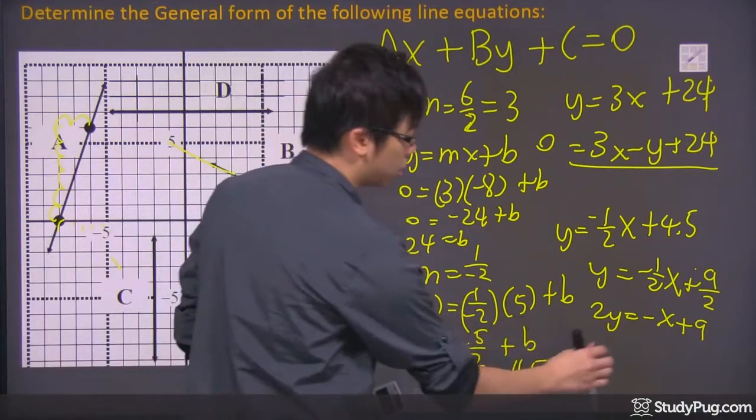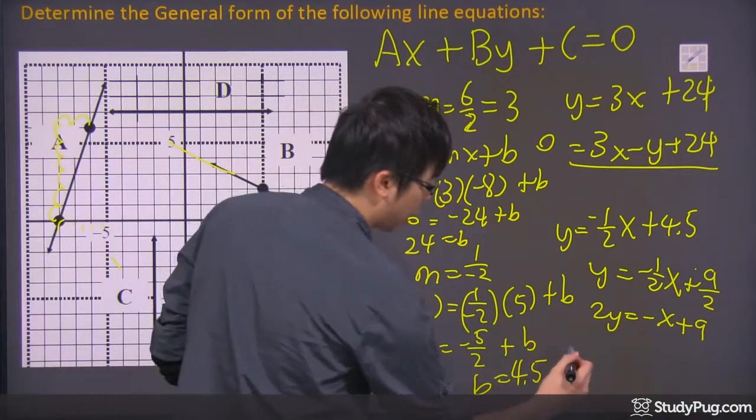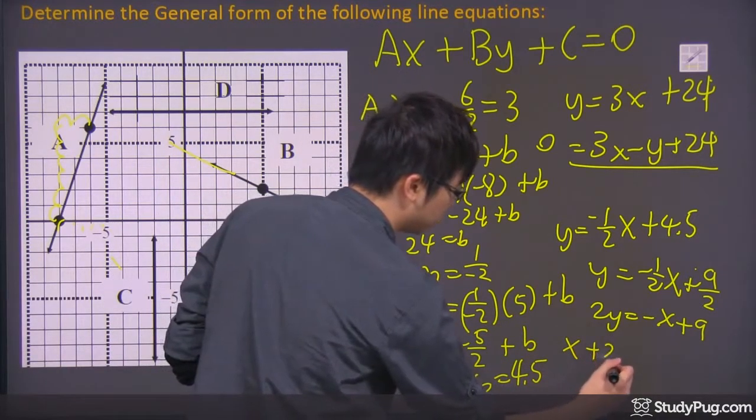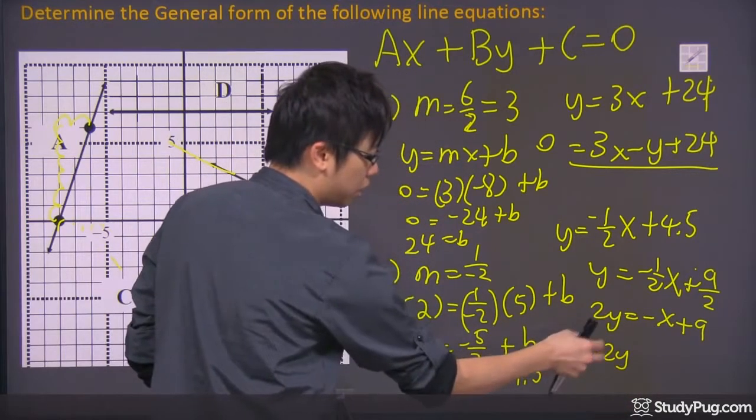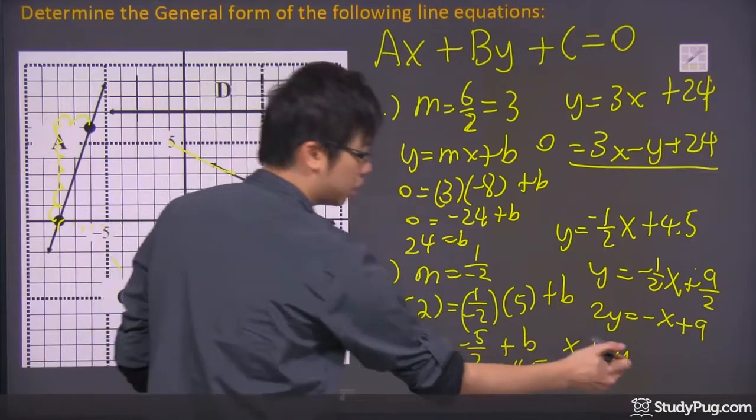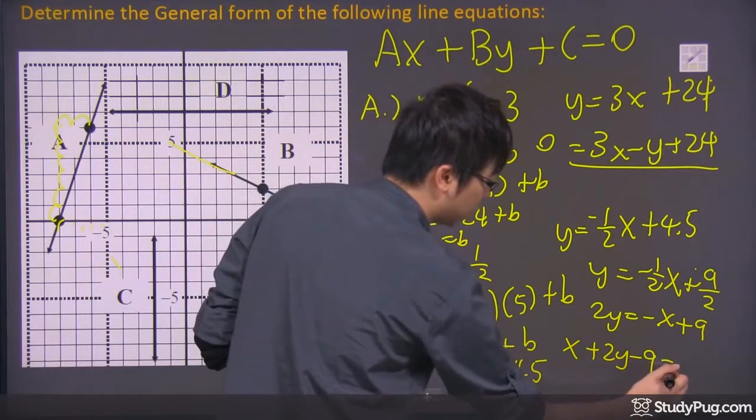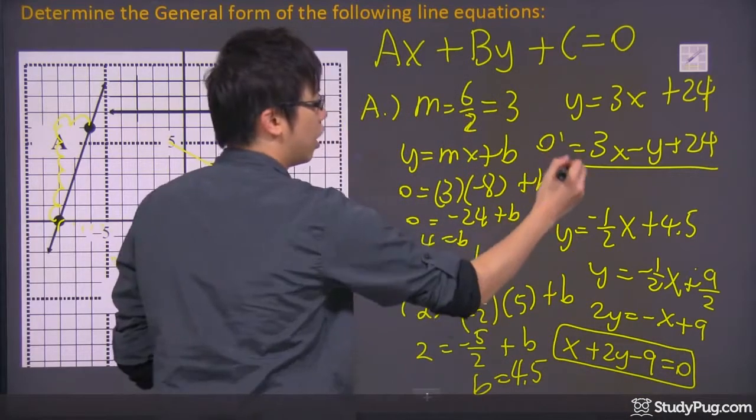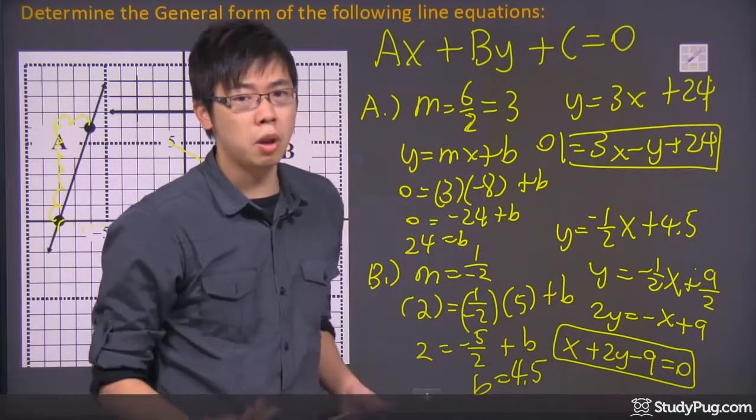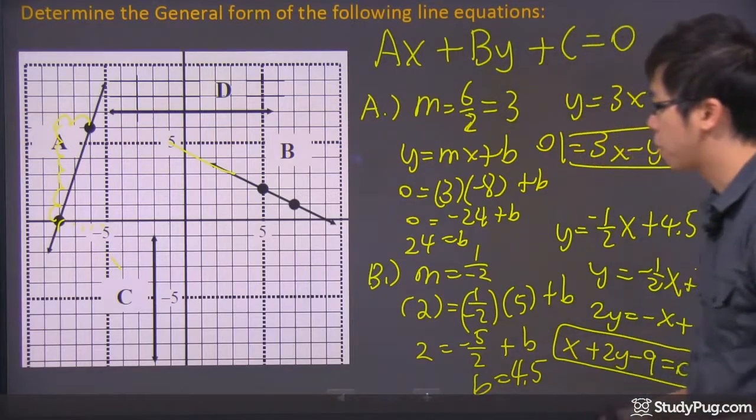Because if you times 2 to everything, the 2 over 2 is cancelled, the 2 over 2 is cancelled. It's just the Y got an extra 2. And then why are we doing this? Because we want the general equation. So once you get this far, the general equation would be X plus 2Y—because I move the X to this side right here—so the 2Y stays, the X comes over here, becomes positive, and the minus 9 equals to 0. And this is the general equation for line B.